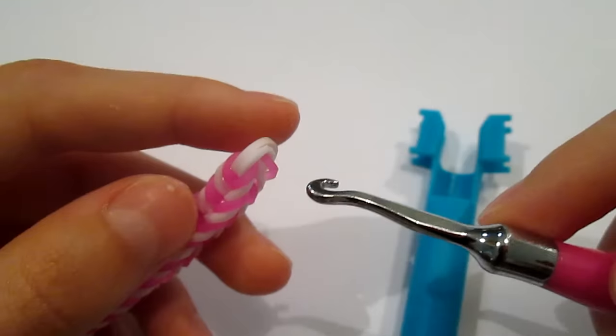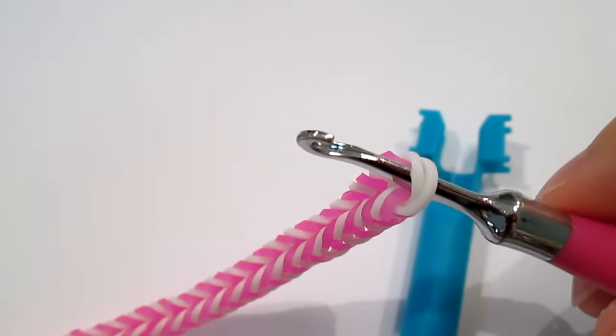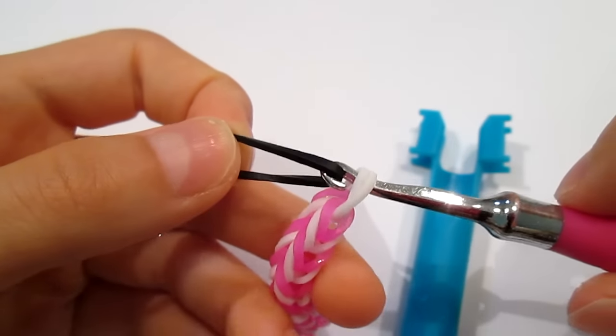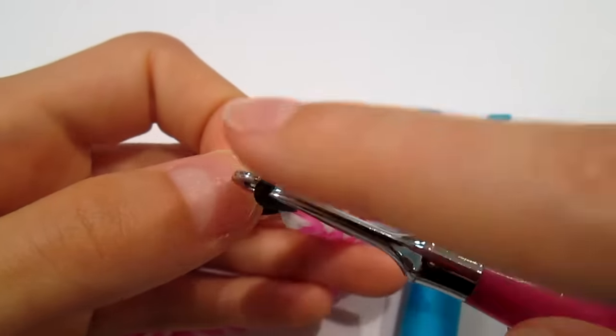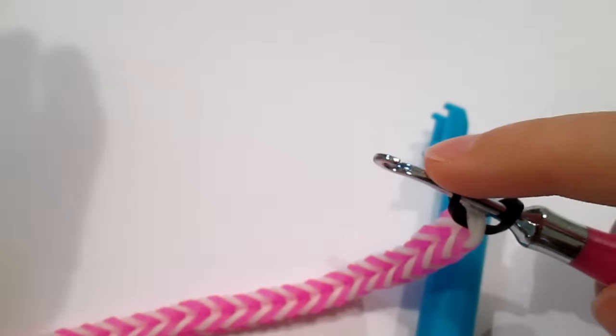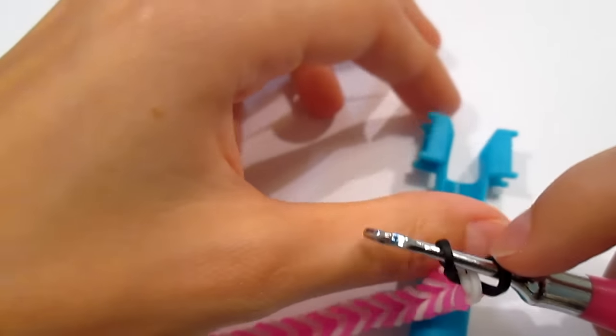And now, I'm going to take your hook, go into your cap band, grab a black or your outside border color. Outside, I guess, DNA part. I don't know what to call it really. And then string it through the cap band.